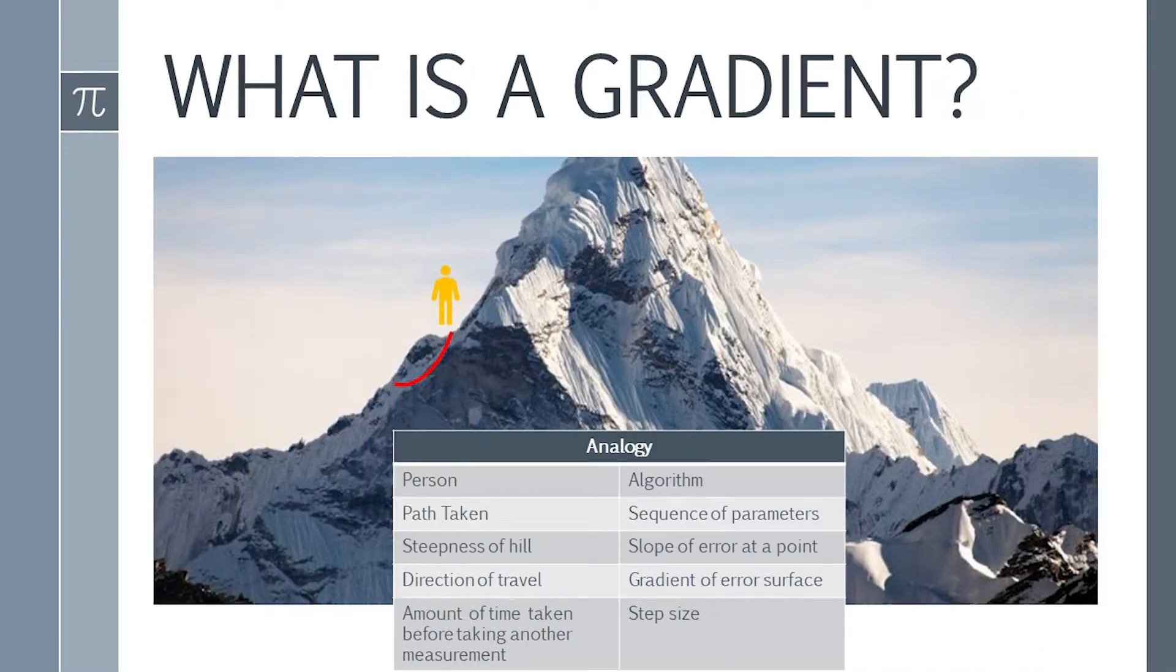In machine learning, a gradient is a derivative of a function that has more than one input variable, known as the slope of a function in mathematical terms. The basic intuition behind gradient descent can be illustrated by a hypothetical scenario.